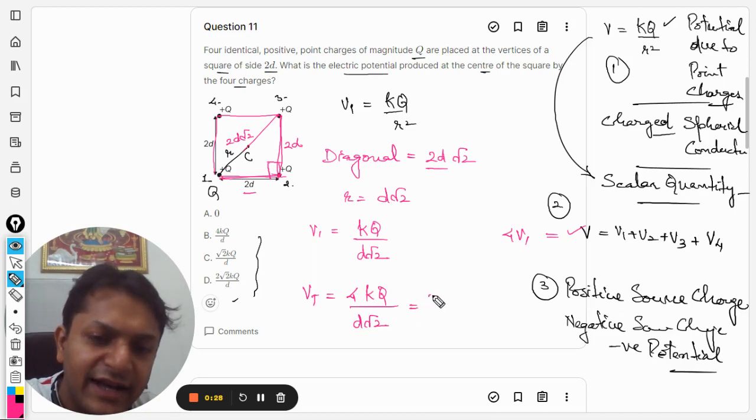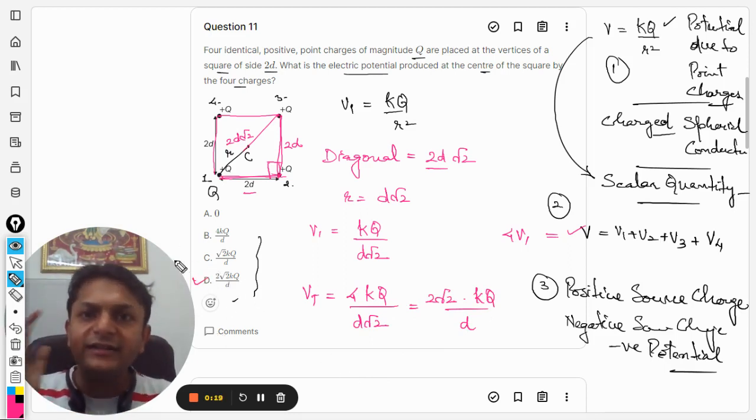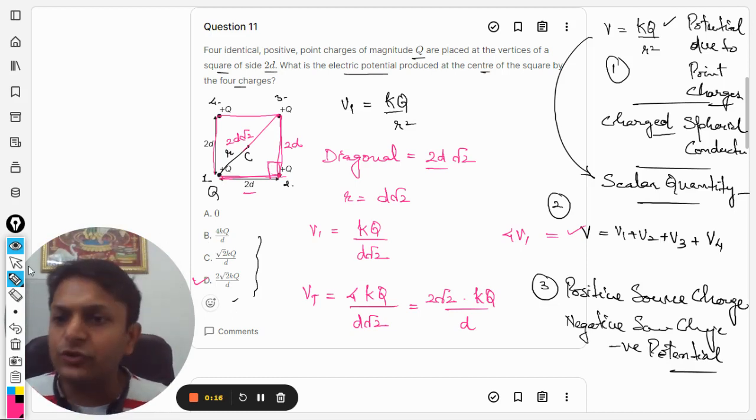So this can be written as 2 root 2 kQ divided by d. And hence d is the correct answer. So this is the explanation for this question.